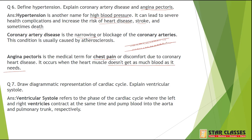Question 7: Explain ventricular systole. Systole means contraction. Ventricular systole refers to the phase of the cardiac cycle where the left and right ventricles contract at the same time, pumping blood into the aorta and pulmonary trunk respectively. The right ventricle sends blood via pulmonary artery to the lungs, and the left ventricle sends it via the aorta to the body.